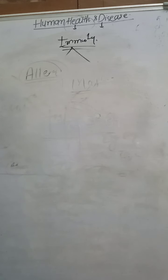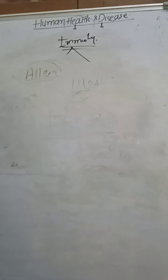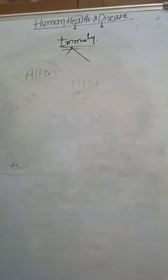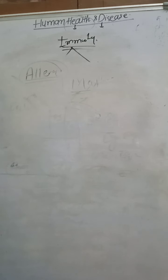Autoimmune disease occurs when our immune system, which normally recognizes self and non-self cells, fails and starts making antibodies against the body's own cells. Examples include rheumatoid arthritis, Graves' disease, and myasthenia gravis. Please revise all these points.